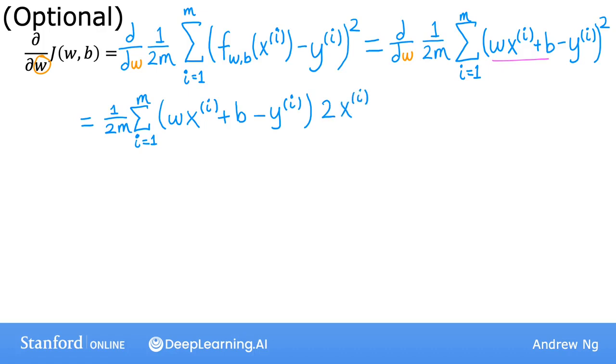Which is why the 2 here and the 2 here cancel out, leaving us with this equation that you saw on the previous slide. So this, by the way, is why we had to define the cost function with the 1 half earlier this week. It's because it makes the partial derivative neater. It cancels out the 2 that appears from computing the derivative.